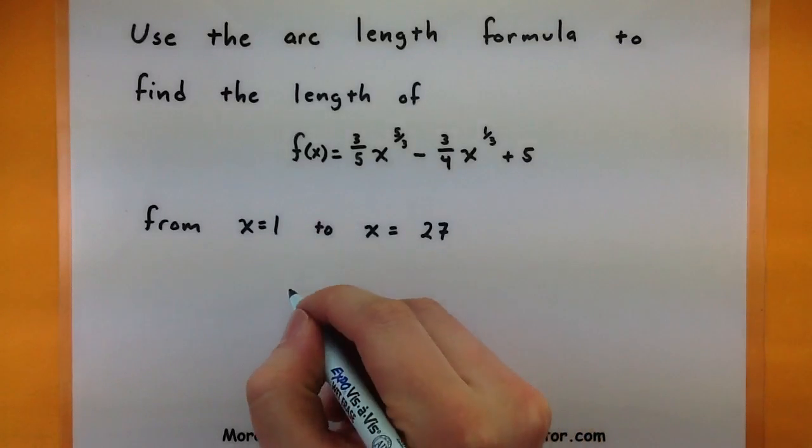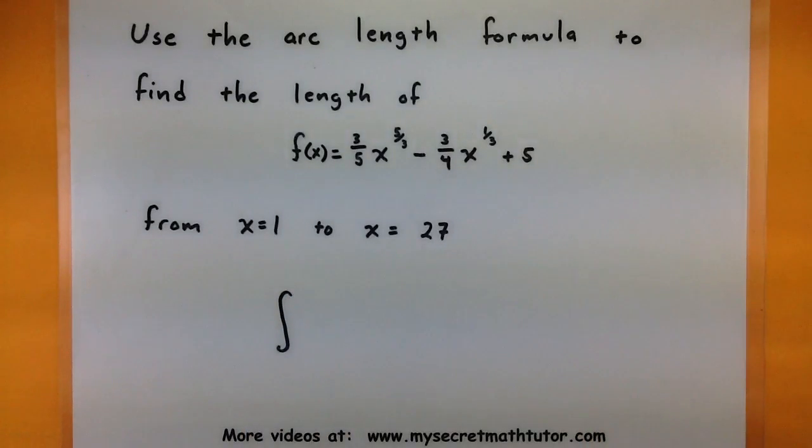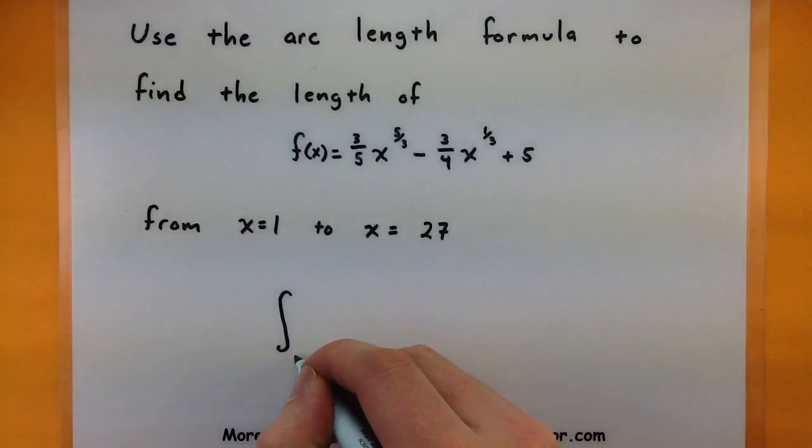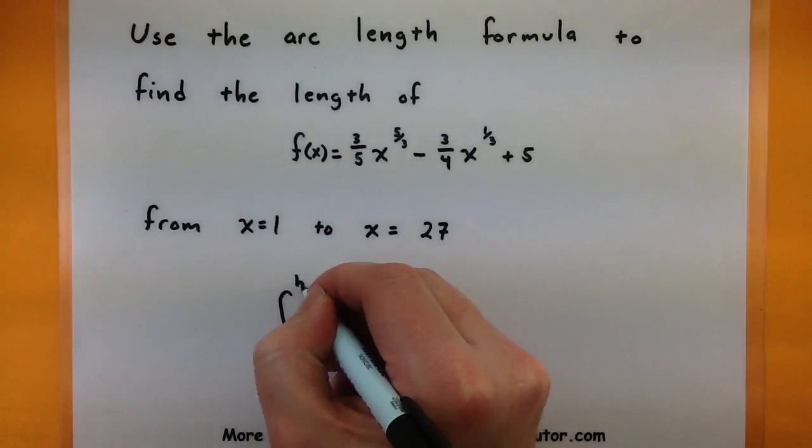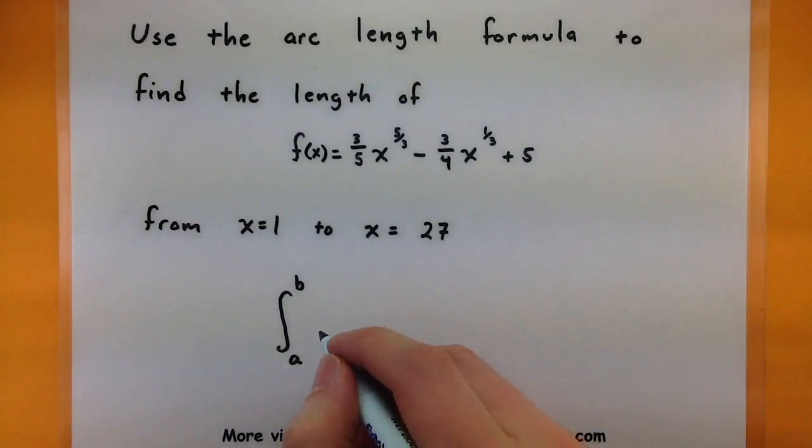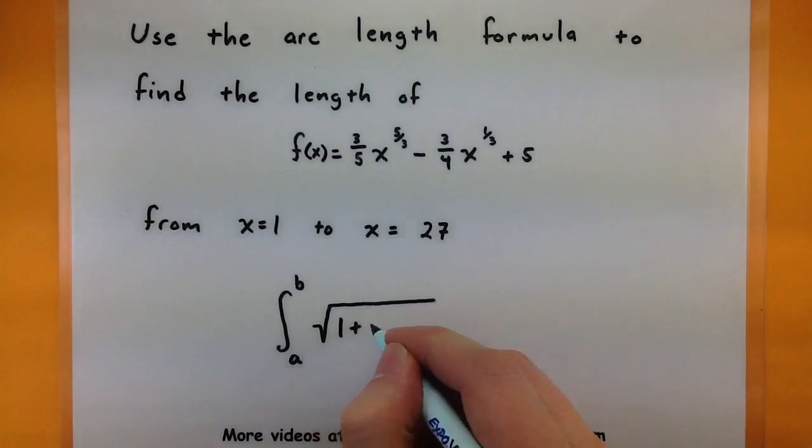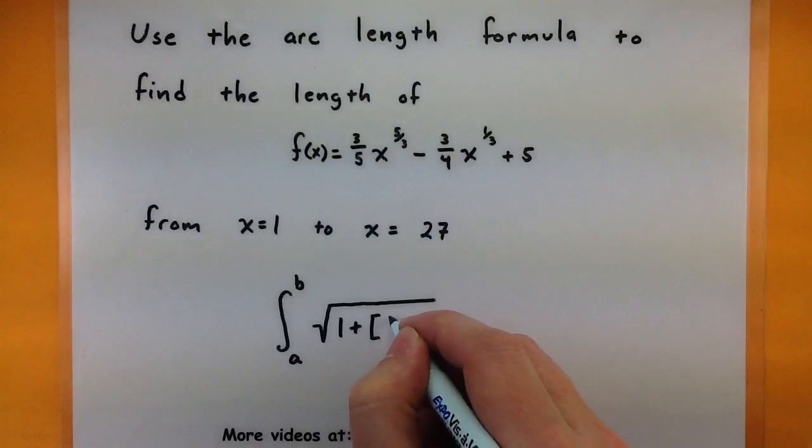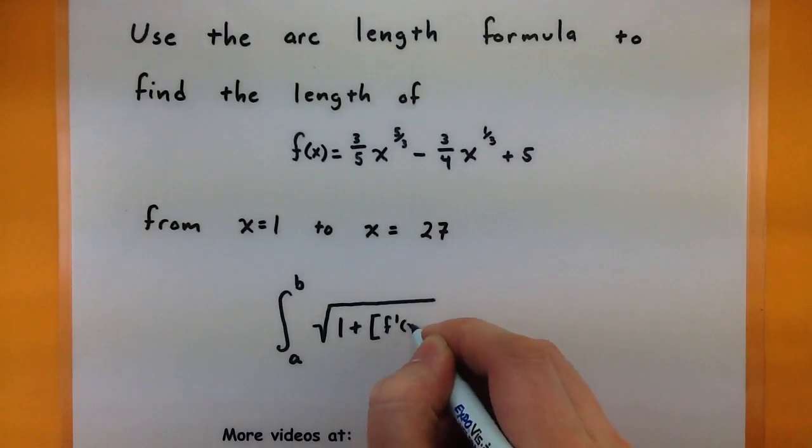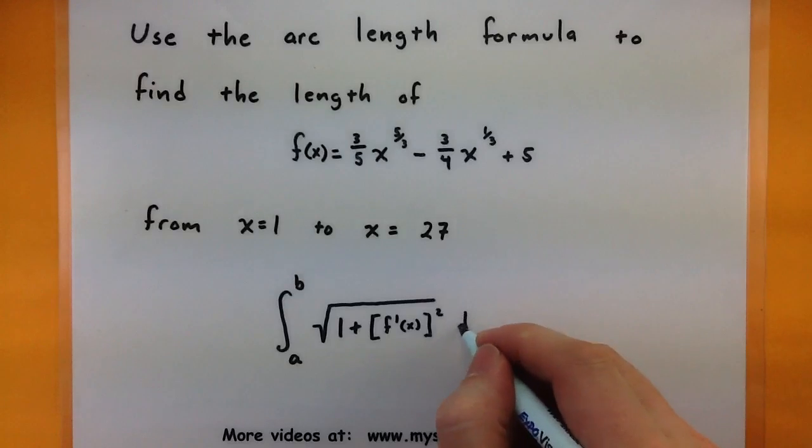Now in case you have forgotten that formula, let's go ahead and write it down so we can see all the parts that we'll need. So in the formula, you end up taking the integral from a to b. And these are usually the points of where you want that curve to start and stop. So in our case, this would be the 1 and 27. Then we have the square root of 1 plus the derivative of the function, all of that being squared dx.